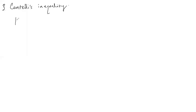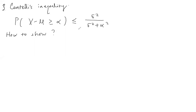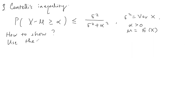Cantelli's inequality gives the following result: P(X - mu ≥ alpha) is bounded by sigma squared over (sigma squared plus alpha squared), where sigma squared is the variance of X, alpha is positive, and mu is the expectation of X. To prove it, we use an extended form of Markov's inequality. Let Y equal X minus mu.